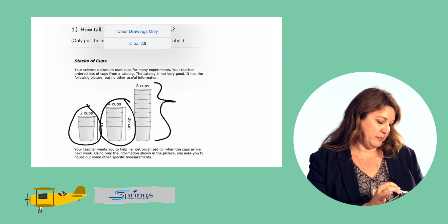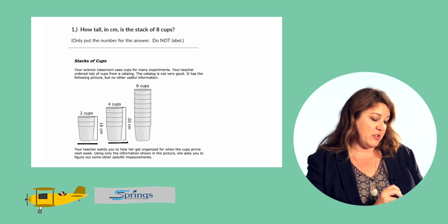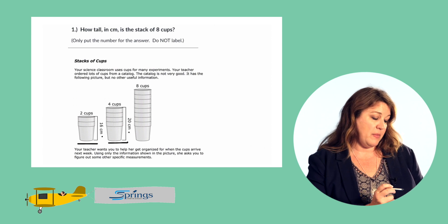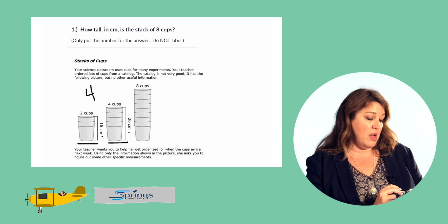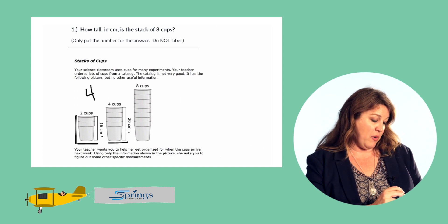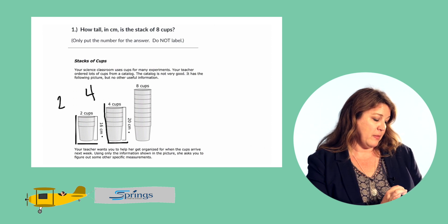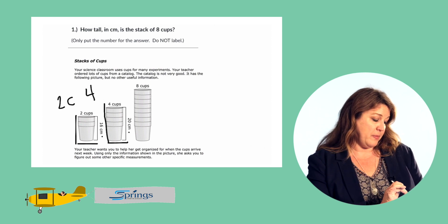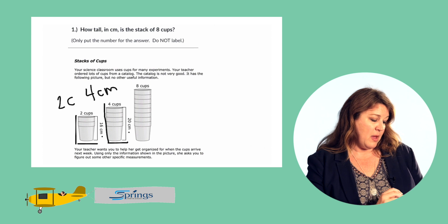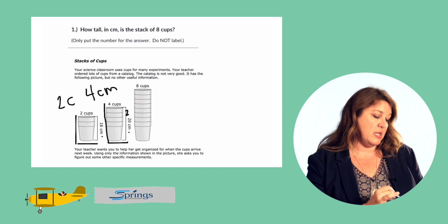So we have two cups that's equal to 16 centimeters and here we have four cups that's equal to 20 centimeters. So the difference between these two stacks is the difference between 20 and 16. The difference is four. The difference is also two cups. So we have two cups in this stack and we have four cups in this stack. If the difference is two cups and the difference is four centimeters, then we can take the four centimeters, divide that by the two cups, and we know that each lip of this cup right here is equal to two.